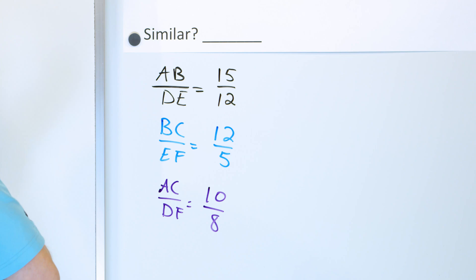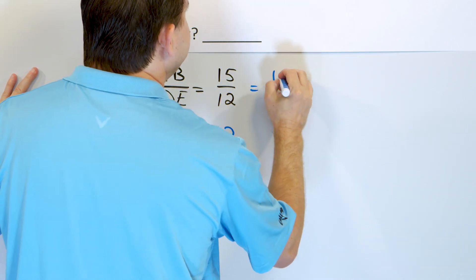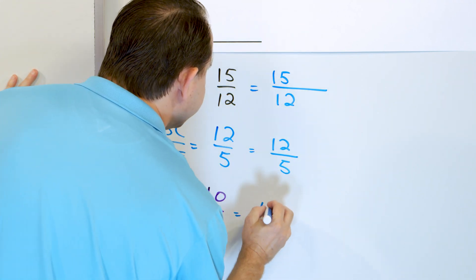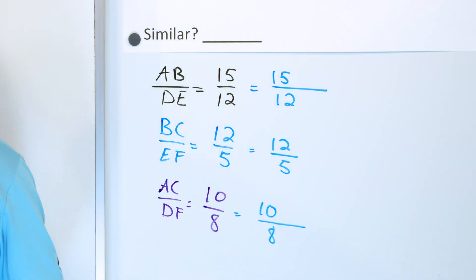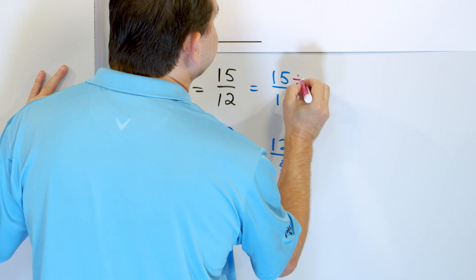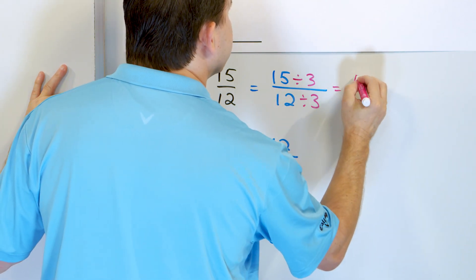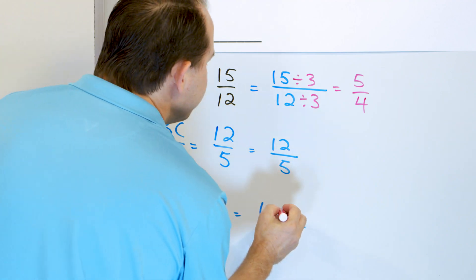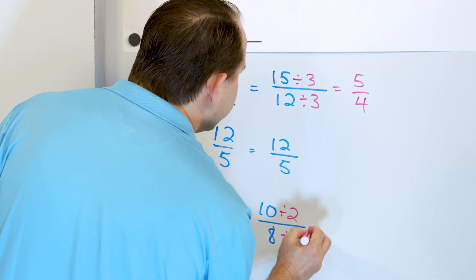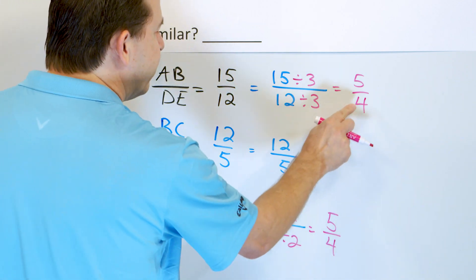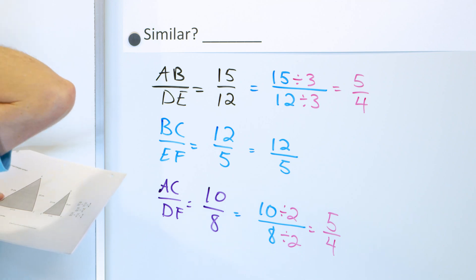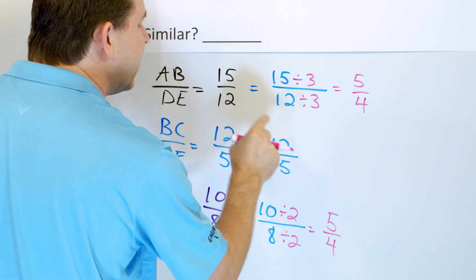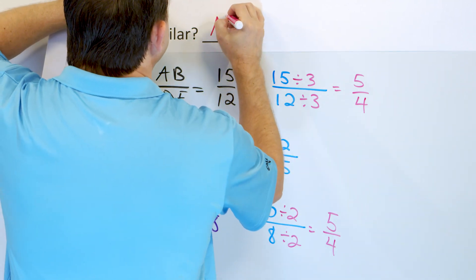Let's simplify all three fractions: 15/12, 12/5, and 10/8. We can divide 15/12 by 3 to get 5/4. The fraction 12/5 can't really be simplified further. We can divide 10/8 by 2 to get 5/4. So two of the ratios simplify to 5/4, but 12/5 is totally different. Because only one side gives a different ratio, these are not similar triangles — you need all three ratios to be the same.